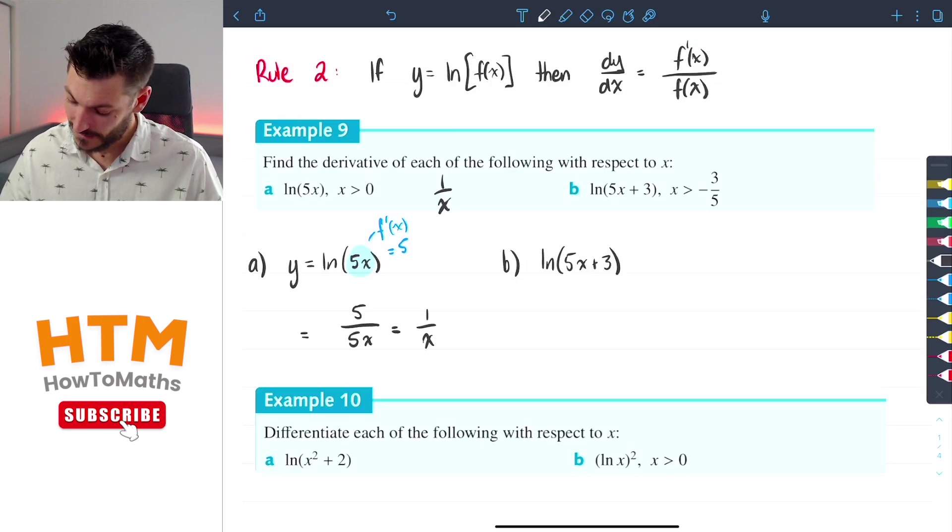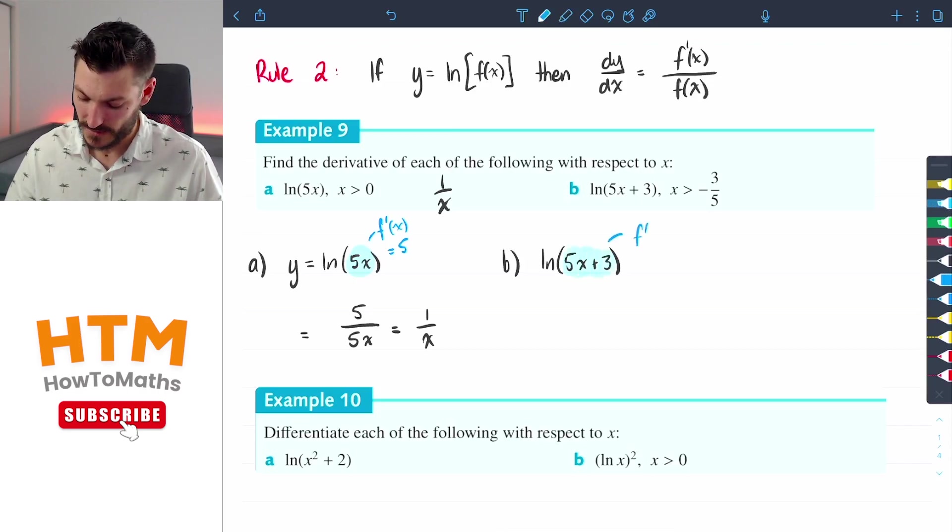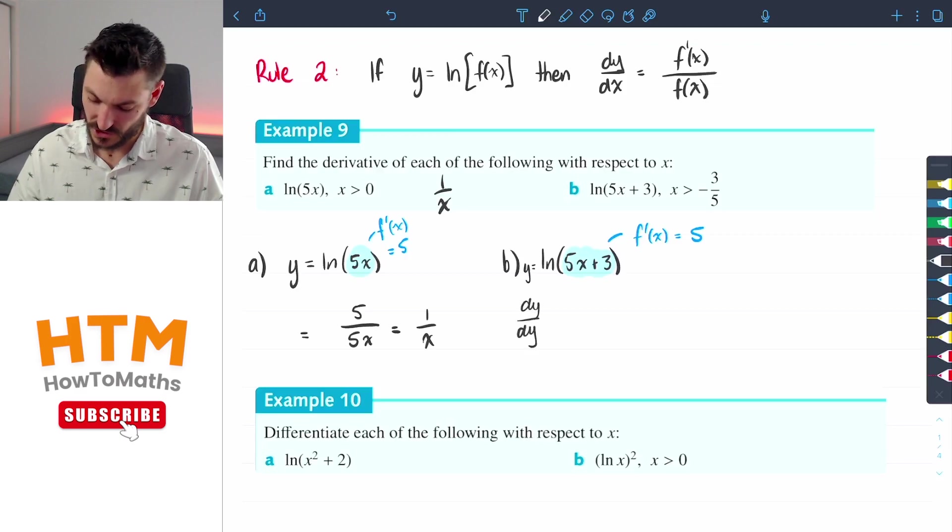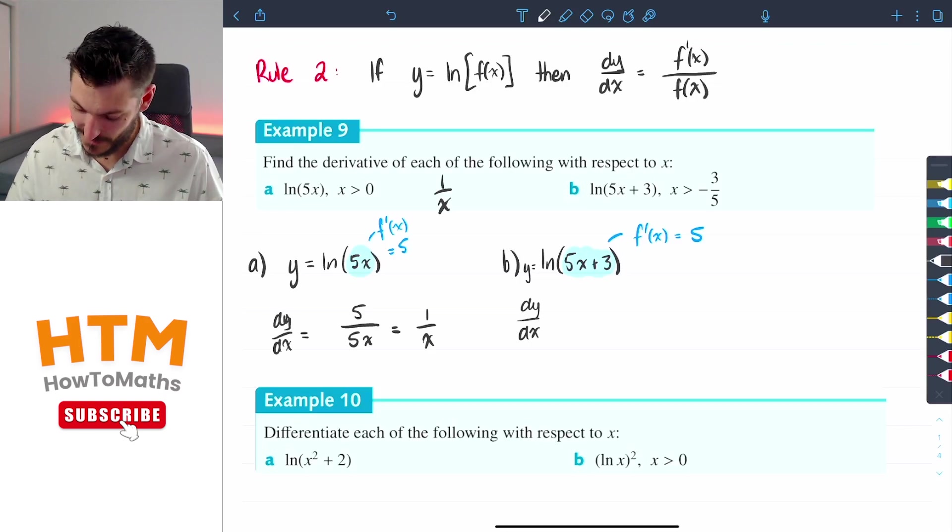So let's move on here, so the derivative of the inside function is going to be f'(x) which is equal to just 5 again. So that part's the same but the denominator will be different in my answer. So if that's y, dy/dx - and I should have also written dy/dx over here as well.